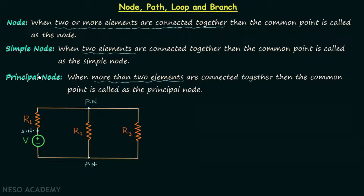Now we will move on to the definition of path. Once we understand what a path is, it is very easy to understand loop and branch. Suppose we start at one node and move through a simple element — R1 is a simple element — and we move through it to the node at the other end. We then continue from that node through a different element, say R3, and move to the node at the other end.